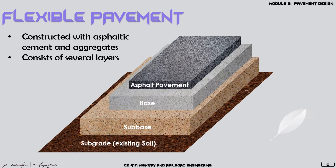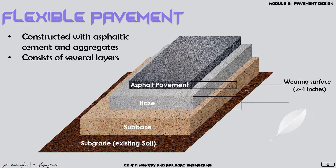For each layer, they will have different thicknesses. The asphalt pavement or wearing surface ranges from 2 to 4 inches. The base will have a thickness of 4 to 10 inches, and the sub-base will also be 4 to 10 inches.